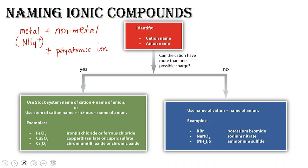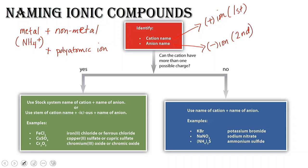If you can answer yes to this, then we're going to use the ionic naming system. So the cation is the positively charged ion, and it comes first. Our anion is the negatively charged ion, and it is named second.